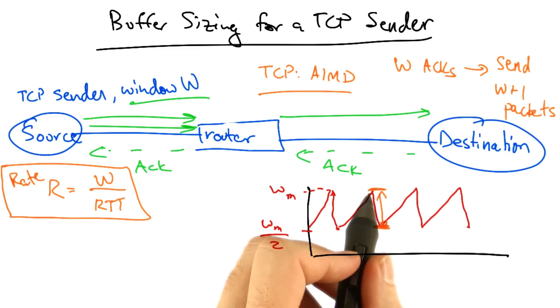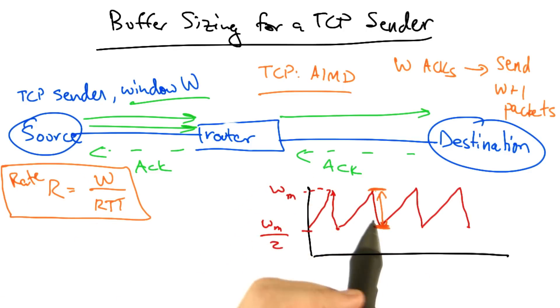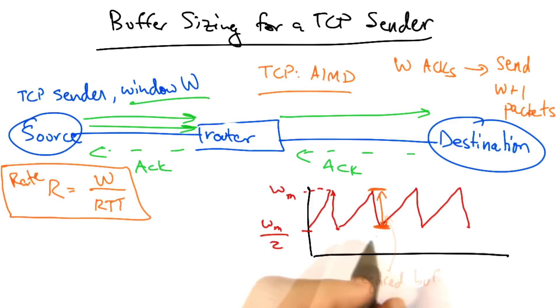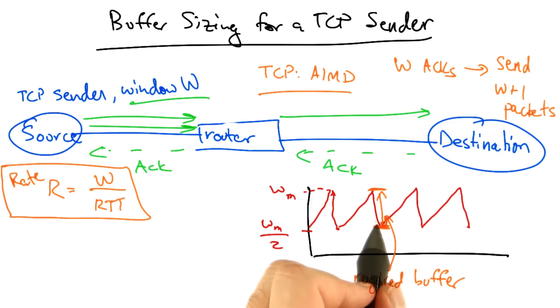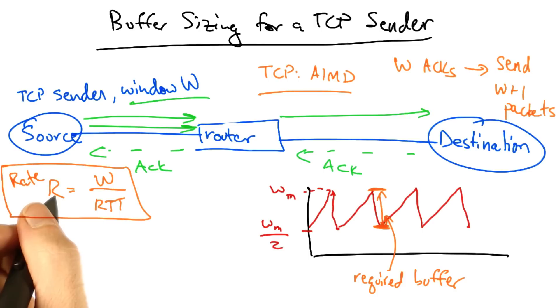So here, right at the point of a packet drop, this represents the maximum number of packets that can be in flight. So again, the required buffer is the maximum number of packets that can be in flight, or simply the height of this TCP sawtooth.